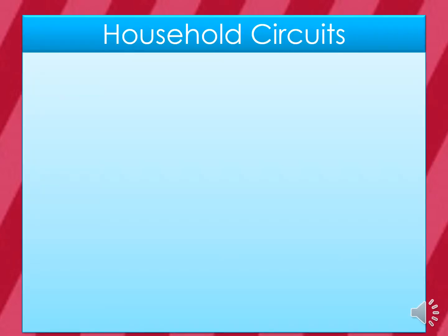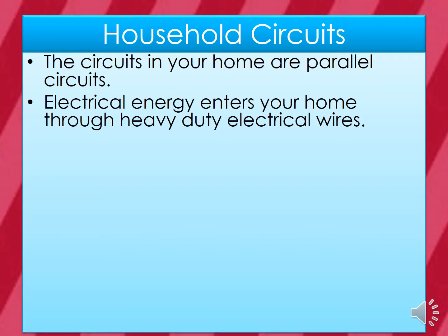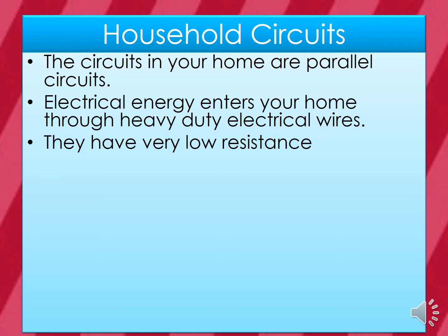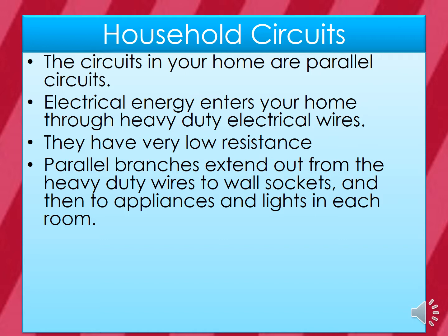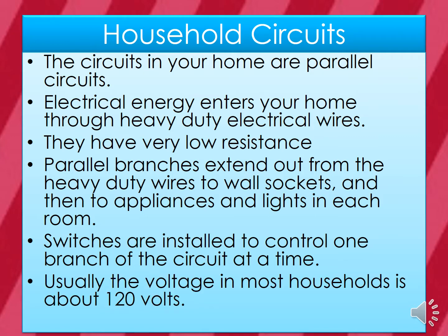The circuits in your home are parallel circuits. Electrical energy enters your home through heavy-duty electrical wires, which have very low resistance. Parallel branches extend out from the heavy-duty wires to wall sockets and then to appliances and lights in each room. Switches are installed to control one branch of the circuit at a time. Usually, the voltage in most households is about 120 volts.